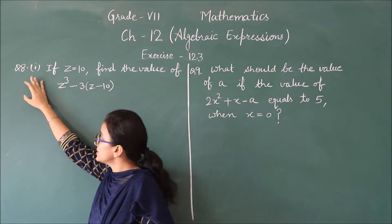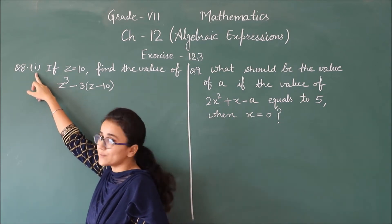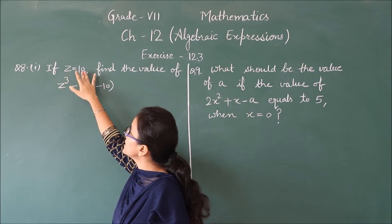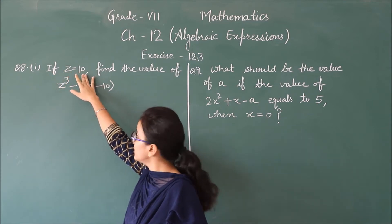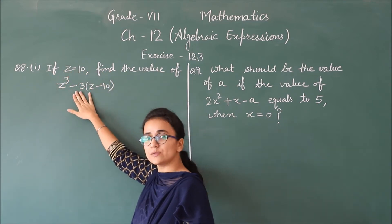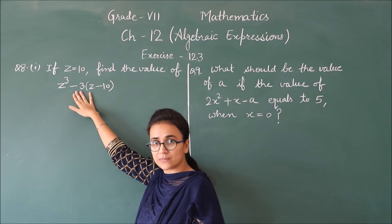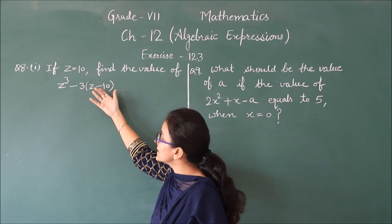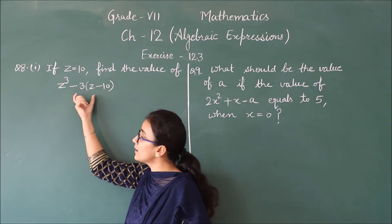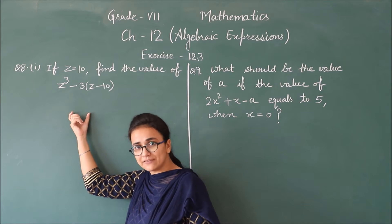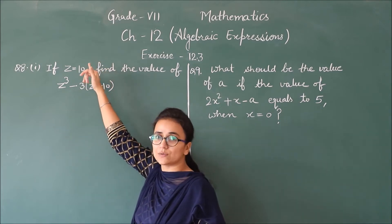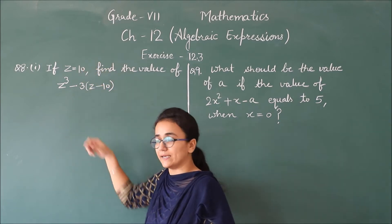8th question, first part: if z is equal to 10, find the value of this expression. We will simplify this expression first and then we will put in the value, that is equal to 10.